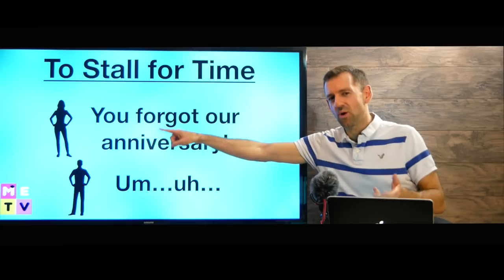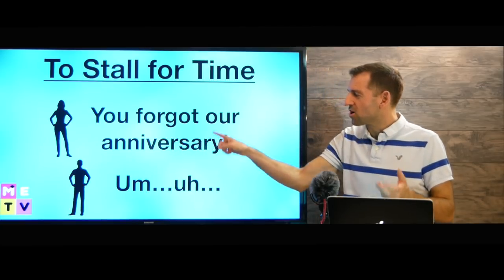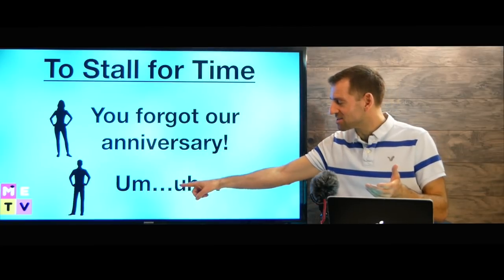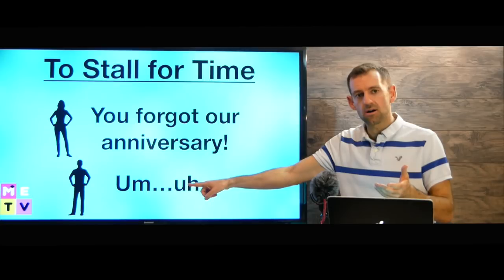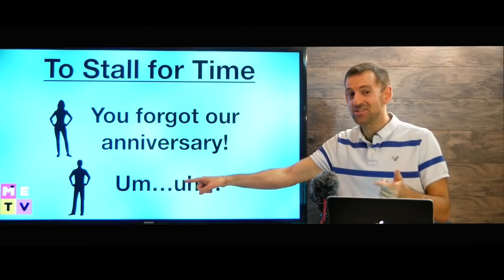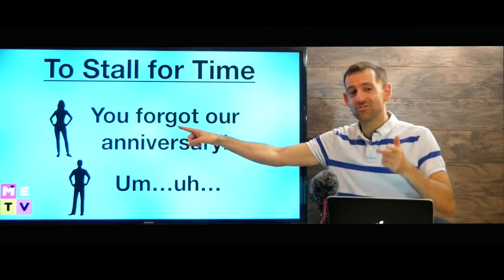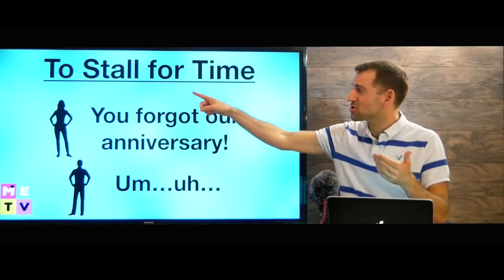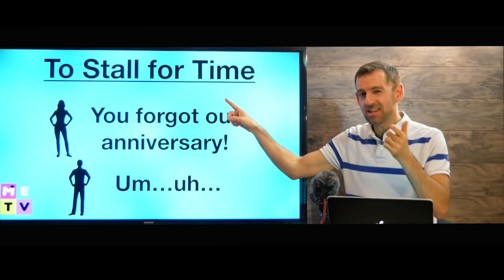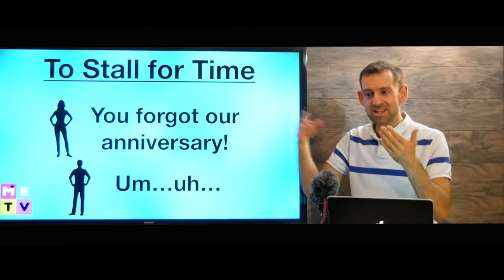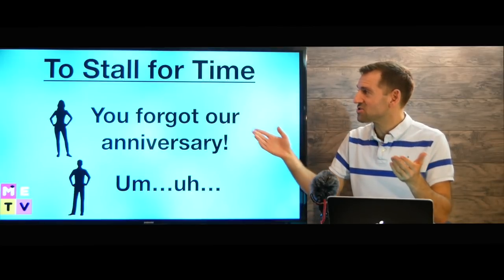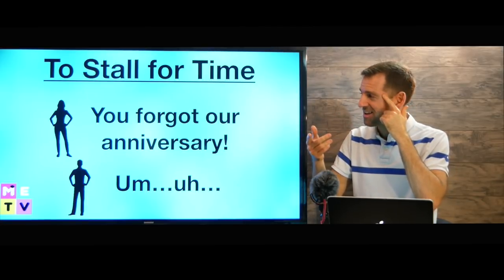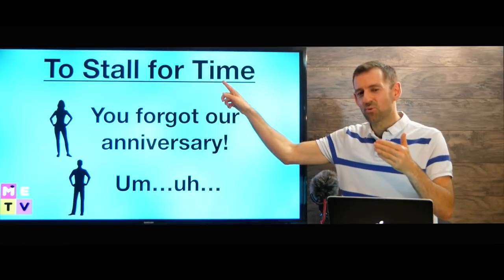Look at this situation. Here's a husband and a wife. And the wife says, you forgot our anniversary. And the husband says, um, uh... Shoot, he knows he's in trouble, right? She's mad, and he doesn't know what to say. So he's stalling for time. He knows that he needs to make up a good excuse. He needs to say something, but he doesn't know what to say. So he wants time to stop so he can think of something to say. We call that stalling for time.